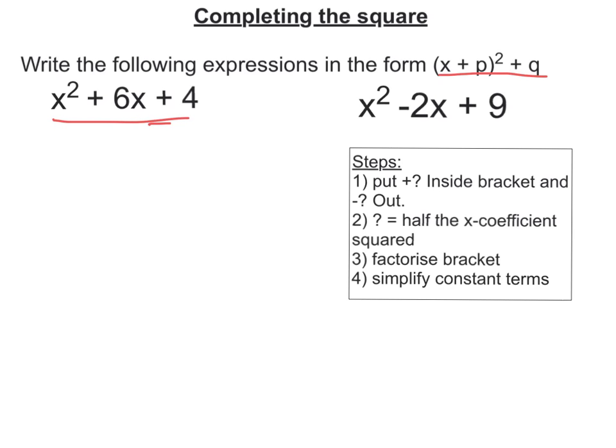So the first thing we do using the steps is first let's have a bracket and put the x squared term in and the x term plus a question mark. We'll fill in that question mark later. And outside we put a takeaway question mark and the constant term.